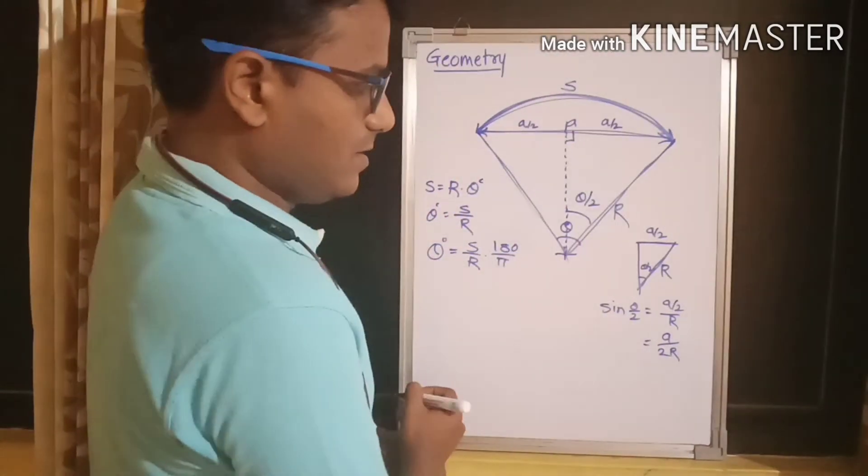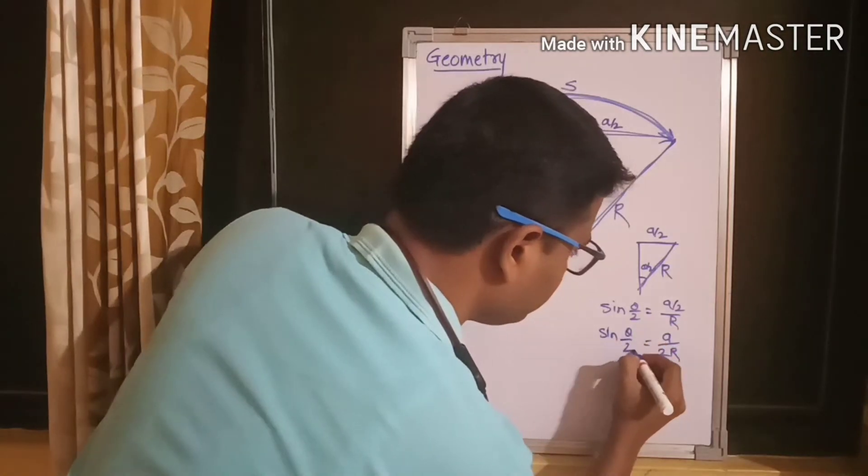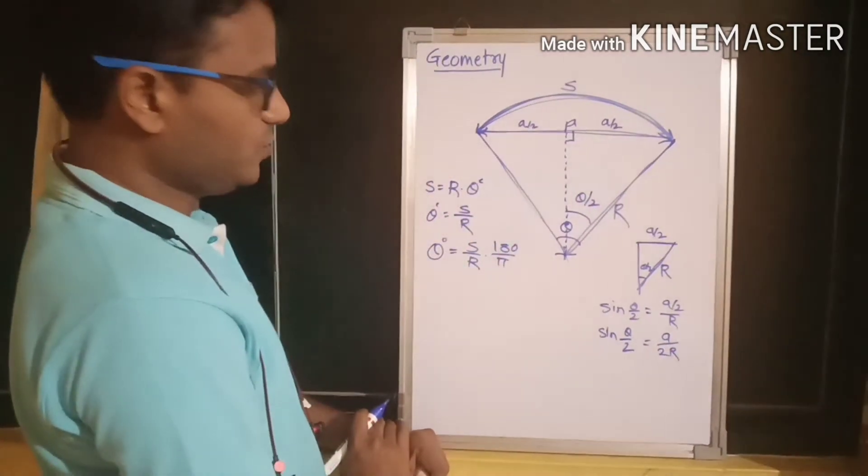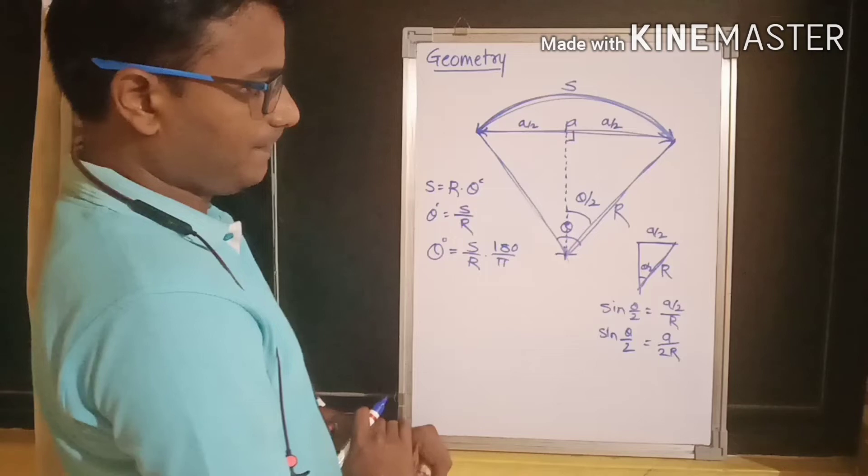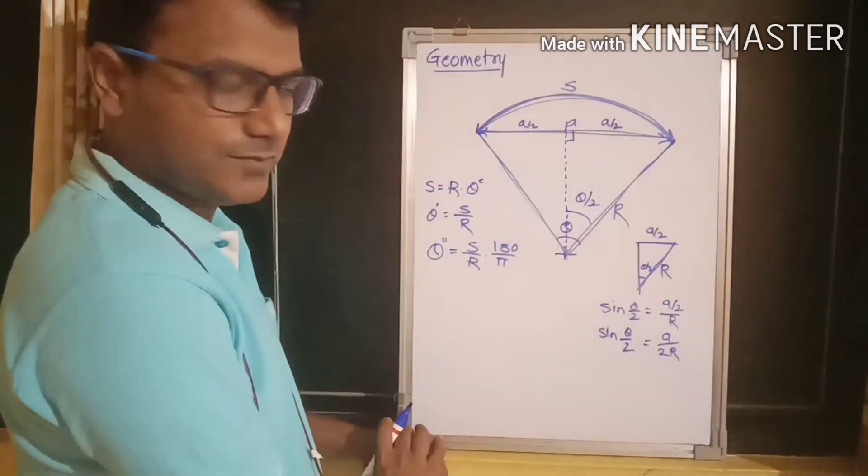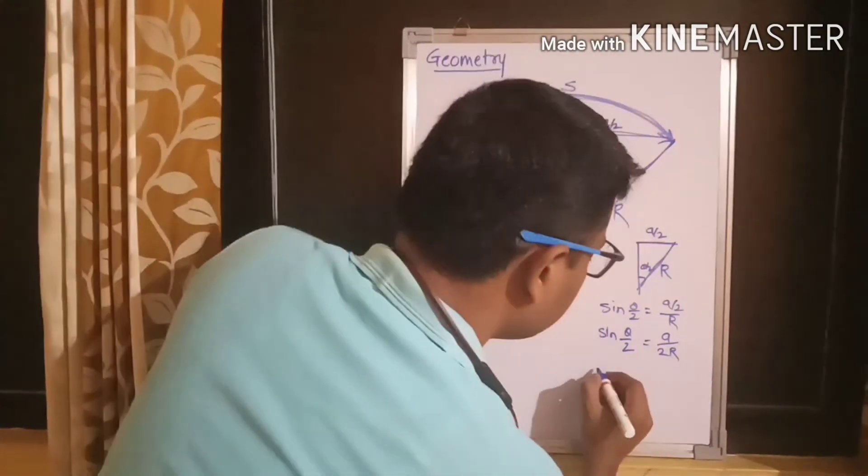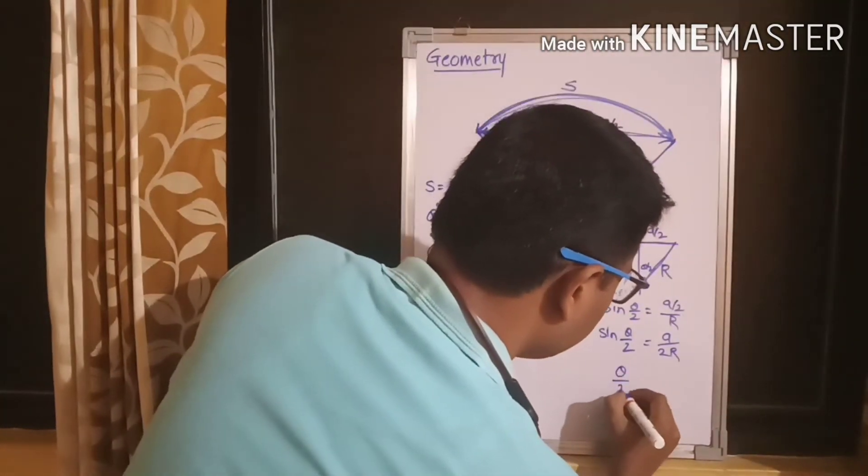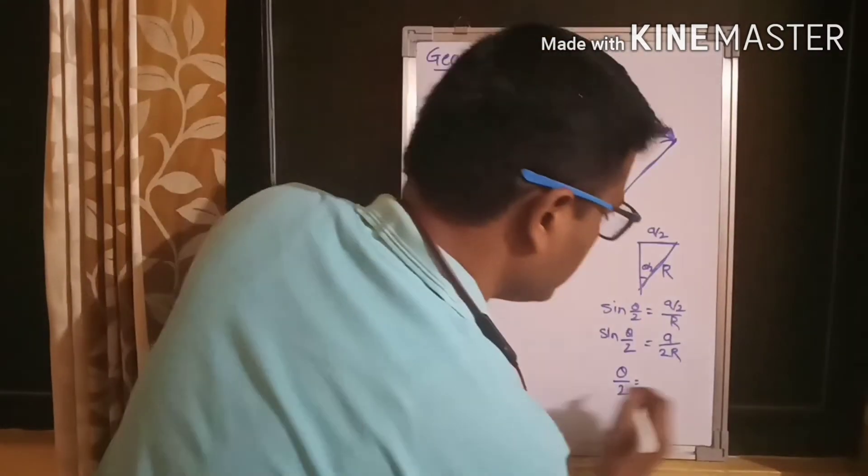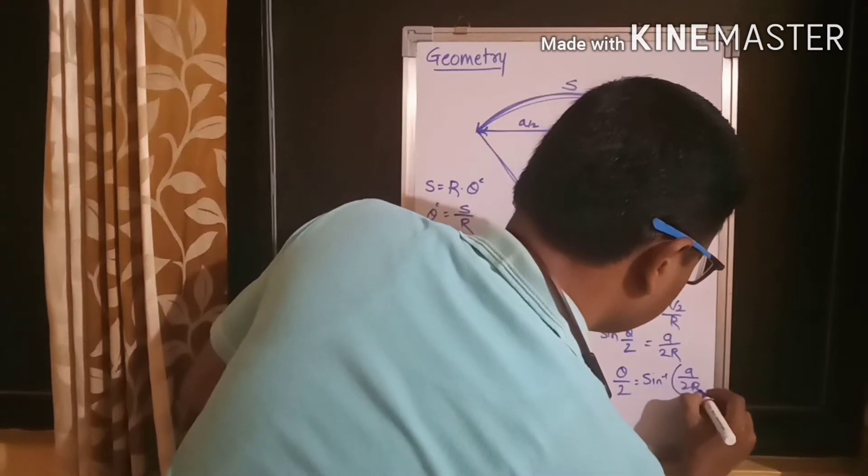Now, we know the sine value of theta by 2 will be equal to a by 2 by r, which will be equal to a by 2r. Okay? Now, what we will do? We will take inverse of this side, inverse of both the sides.